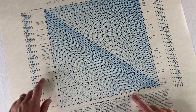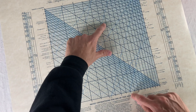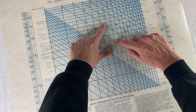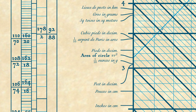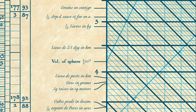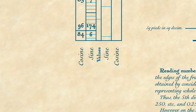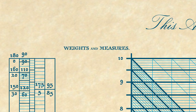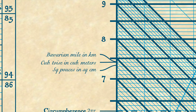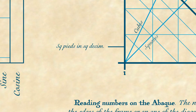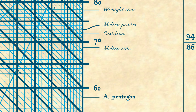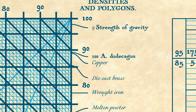You just line up something down here, something up here, maybe something over here. It has area of circle, volume of sphere, sine, cosine, tangent, weights and measures including Bavarian miles in kilometers, square pies in square decimeters, molten zinc, a dodecagon.